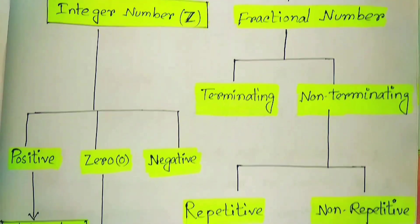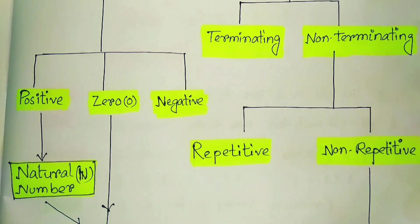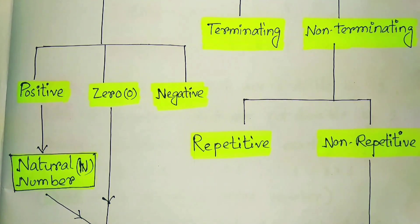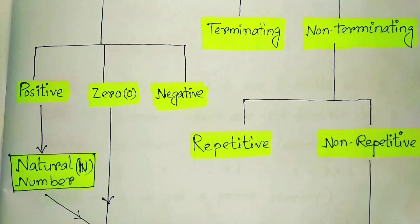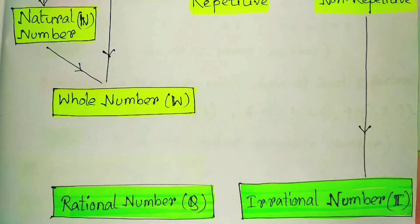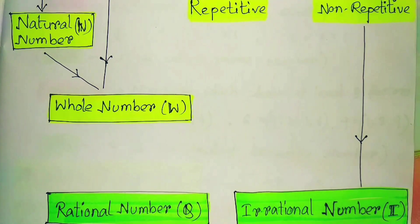Non-terminating fractional numbers can be further divided into two parts: repetitive and non-repetitive. Natural numbers, whole numbers, negative numbers, terminating fractions, and repetitive fractional numbers all make up the rational numbers. Only the non-repetitive fractional numbers are part of the irrational numbers.